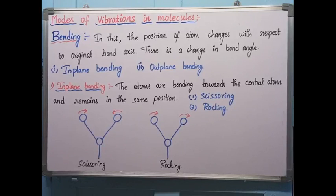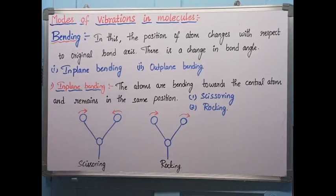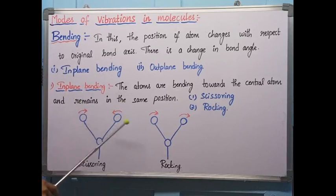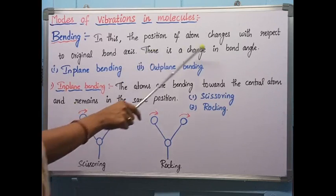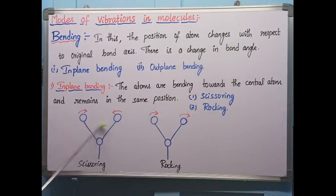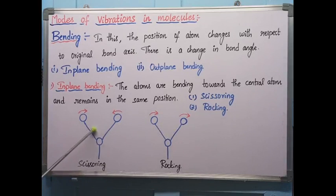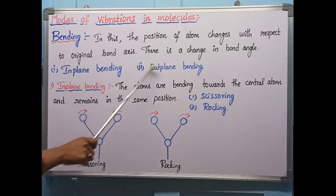The second type of vibration is bending. In bending, the position of atoms changes with respect to the original bond axis — atoms move inside or outside. This causes a change in the bond angle. Bending is of two types: in-plane bending and out-of-plane bending.